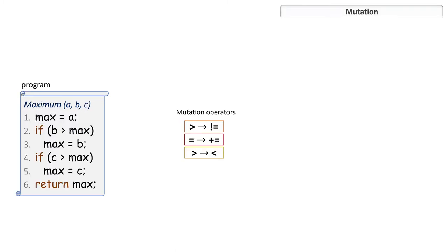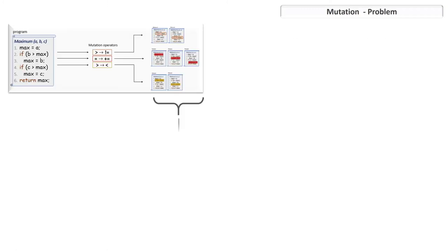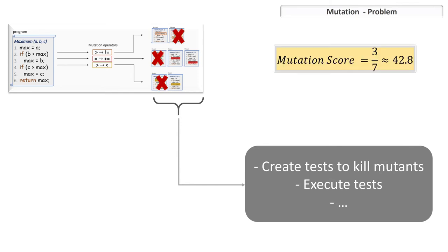Another test adequacy criterion is called mutation testing, which injects faults in the program based on a defined set of rules called mutation operators. When the mutations are inserted and the mutants are generated, these mutants are used to create tests, and the tests are executed to see how many mutations are killed or how many artificial faults are found. This can help to drive the testing.